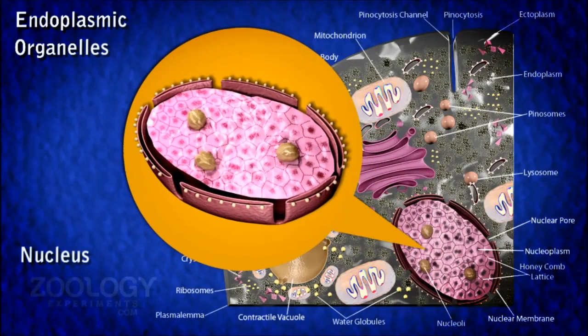Nucleus. In amoeba proteus, the nucleus is a large flattened discoidal and slightly biconcave structure. It is present in the endoplasm. The nucleus is difficult to see in a living animal. The nucleus is granular.